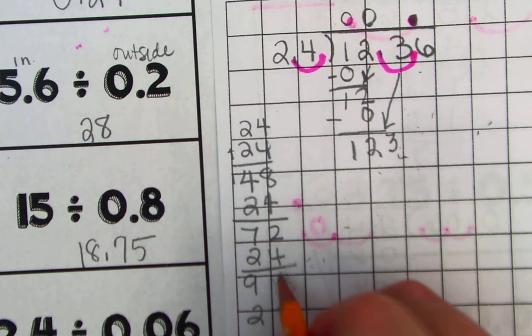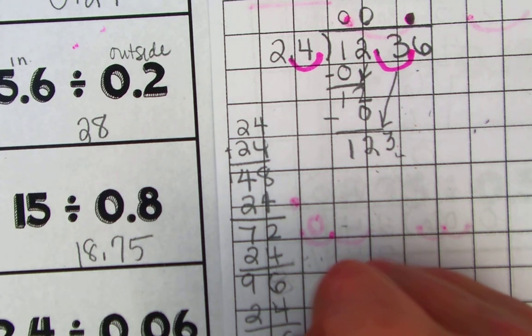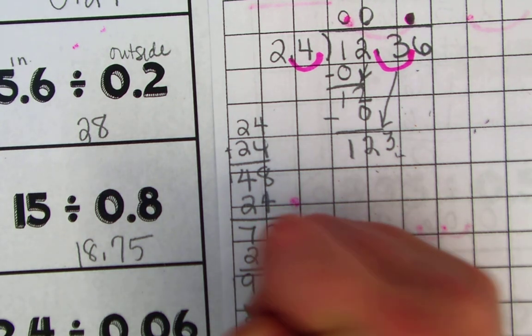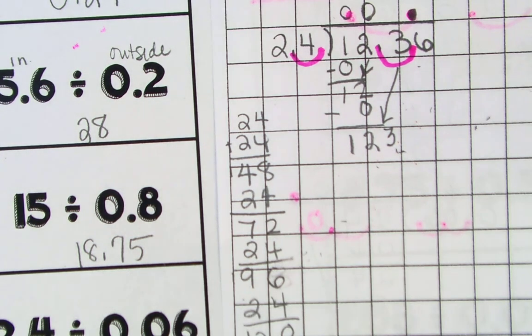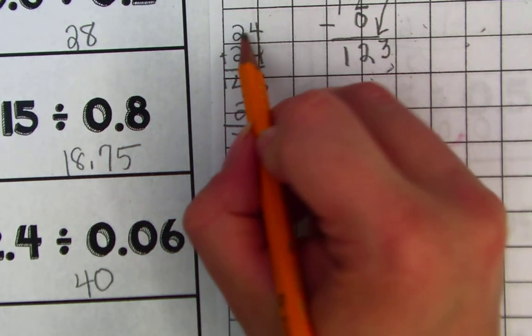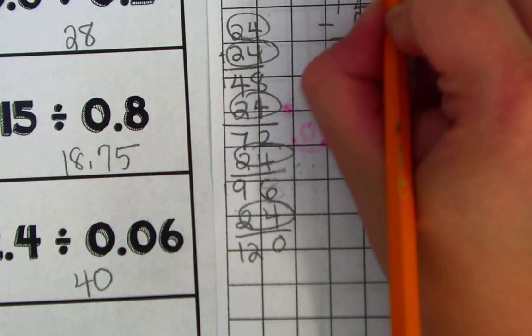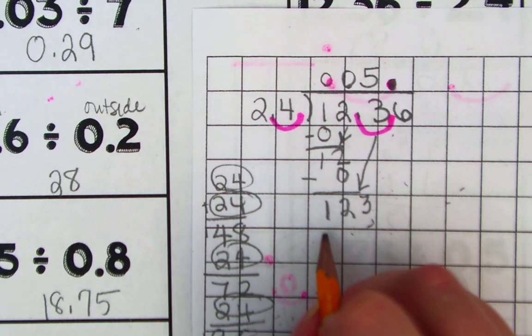I know if I keep going, I'm going to end up going over 123. So now I'm going to count how many 24's I have. I have 1, I have 5. 5 times 24 got me 120.